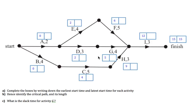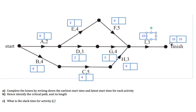We've just finished the forward scan and worked out our earliest start times for each activity, giving an overall completion time of 15. Now we're going to work backwards to figure out the latest starting time, which is the second number for each activity. Working backwards involves subtractions. For Activity I, if it takes three to finish, then in order to complete the project by 15, it must start at 12. So the latest start time for Activity I is 12.